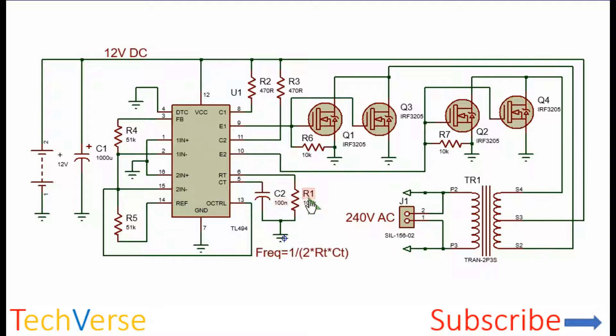So the frequency is determined by C2 and R1 and the formulas are shown here. You can select any parameters you want for any decent frequency. If you use the parameters I have indicated of 100 nanofarads and 100 kilo ohms, the frequency is about 50 hertz which is the standard for many countries.